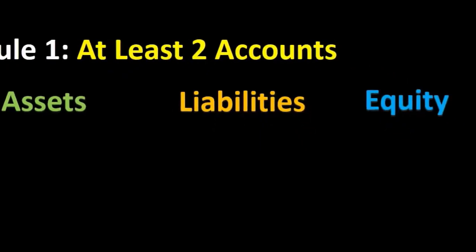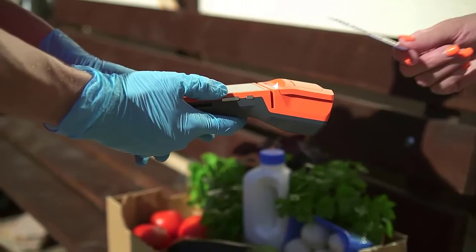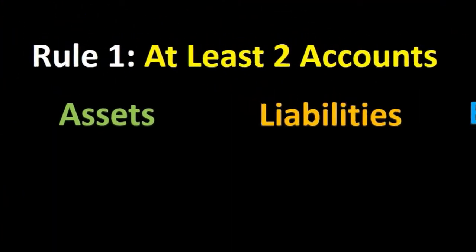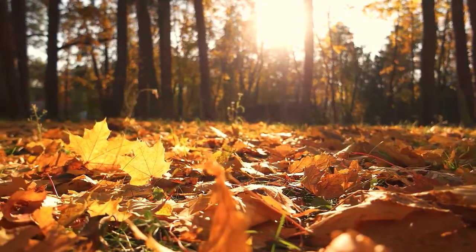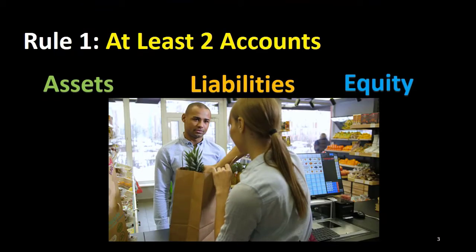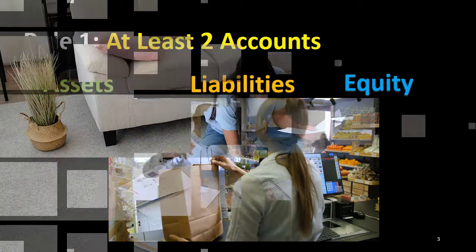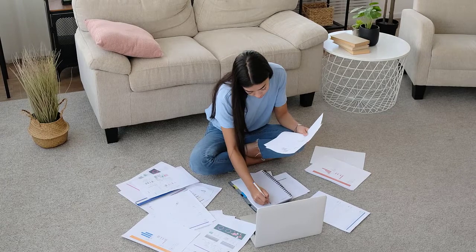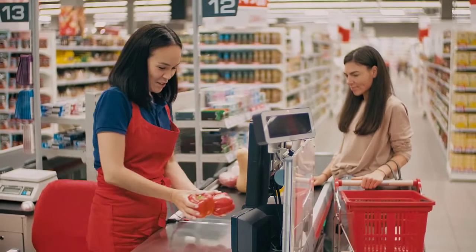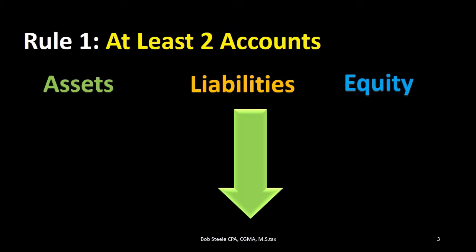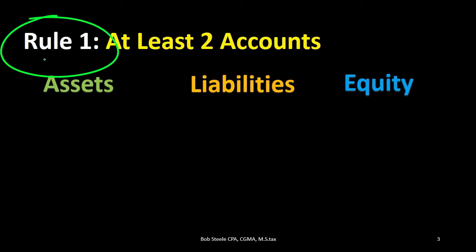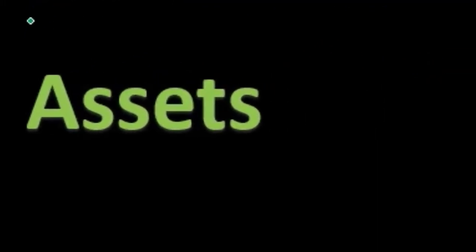First rule: at least two accounts will be affected whenever we record any transaction, whether we're talking about recording payroll, accounts receivable, accounts payable — all those normal things that the accounting department does on a day-to-day basis. Those transactions are often related to documentation such as invoices and bills, which when input into the system would record a transaction used to generate financial statements. Every financial transaction can be represented in terms of the accounting equation, and we're going to list the rules for understanding what those transactions would be.